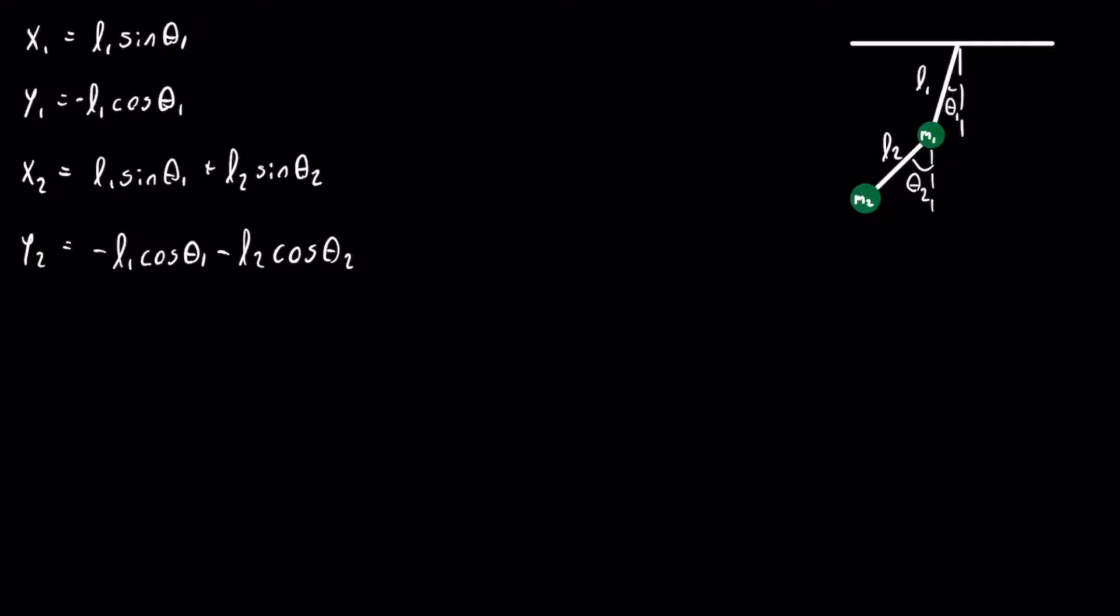Firstly, let's take the time derivative of x1 to get x1 dot. For this, we can use the chain rule and take the derivative of x1 with respect to theta 1, and then multiply it by the time derivative of theta 1. So, the derivative of sine of theta 1 with respect to theta 1 is cosine of theta 1, and the time derivative of theta 1 is theta 1 dot. That will be the answer as shown on the screen.